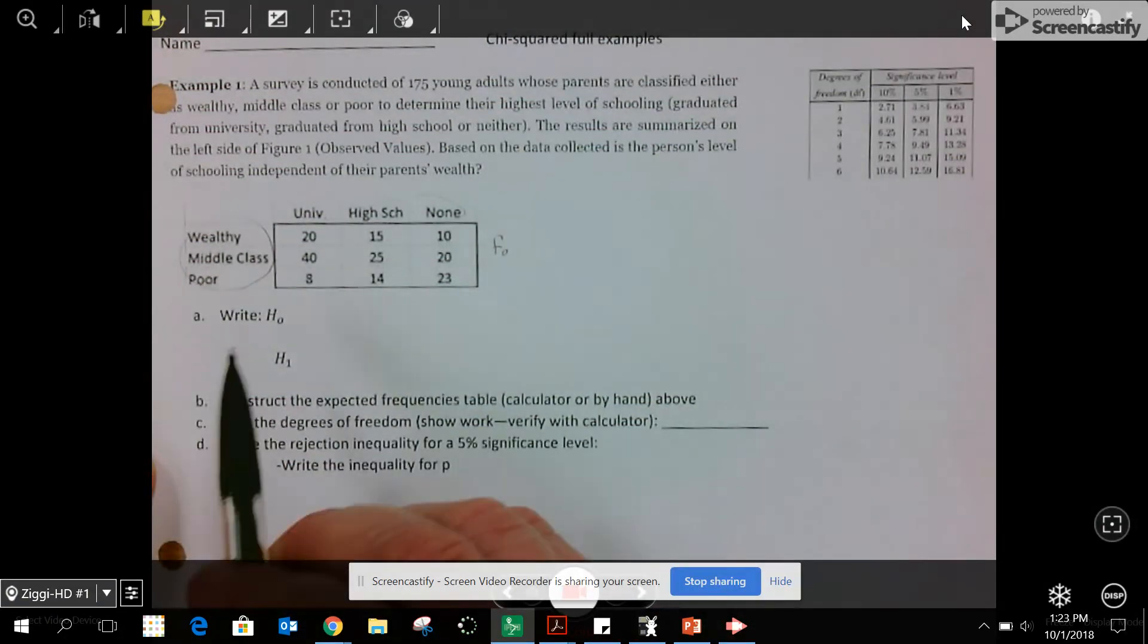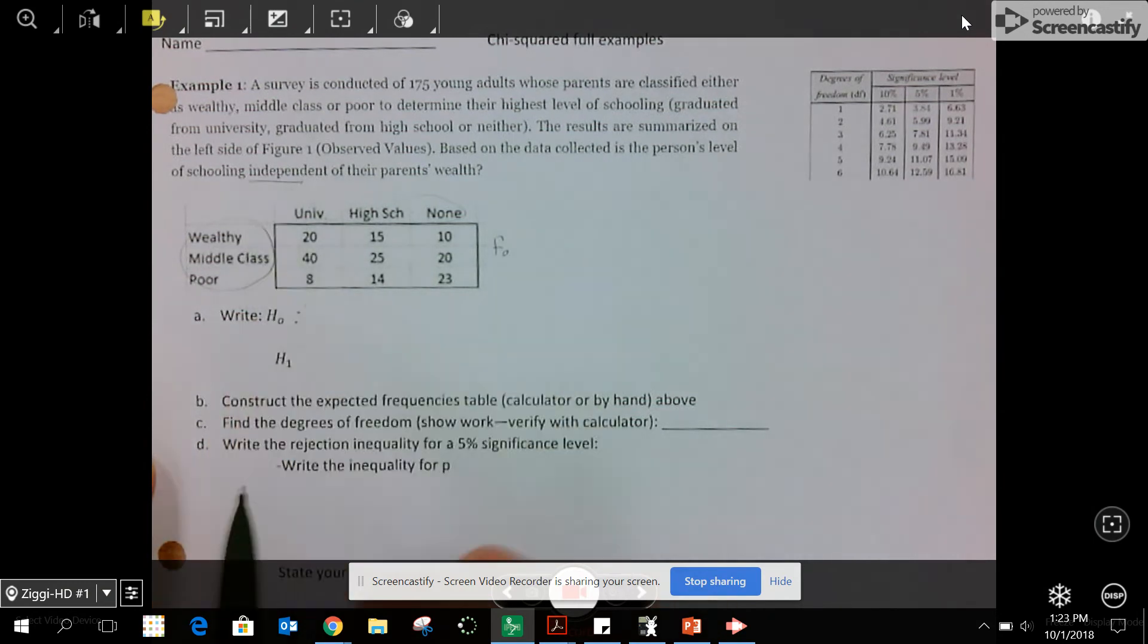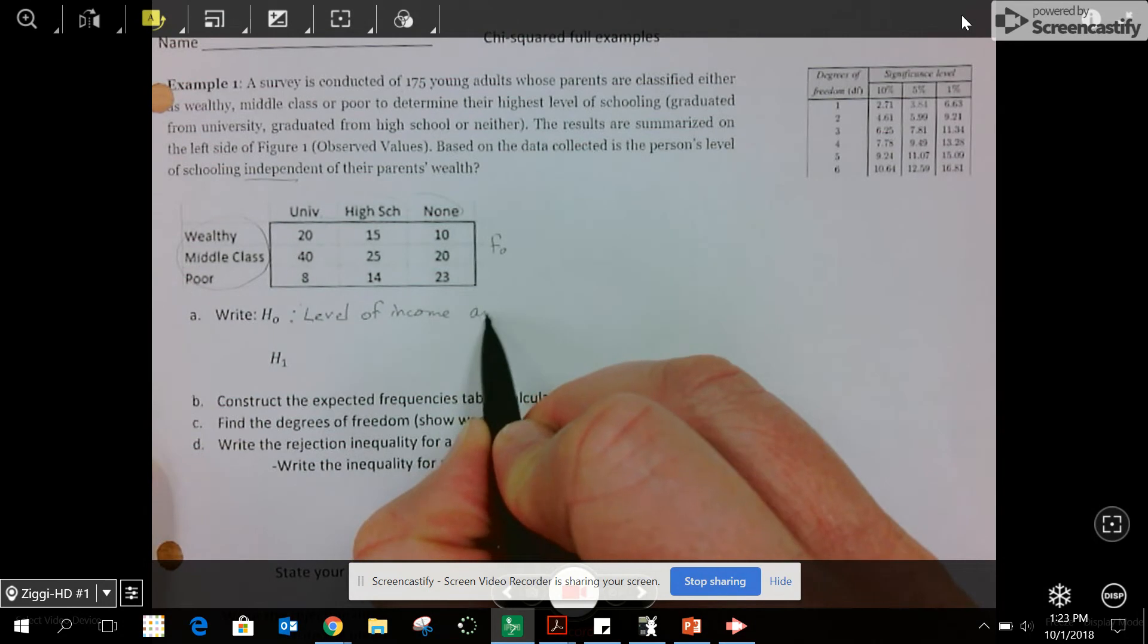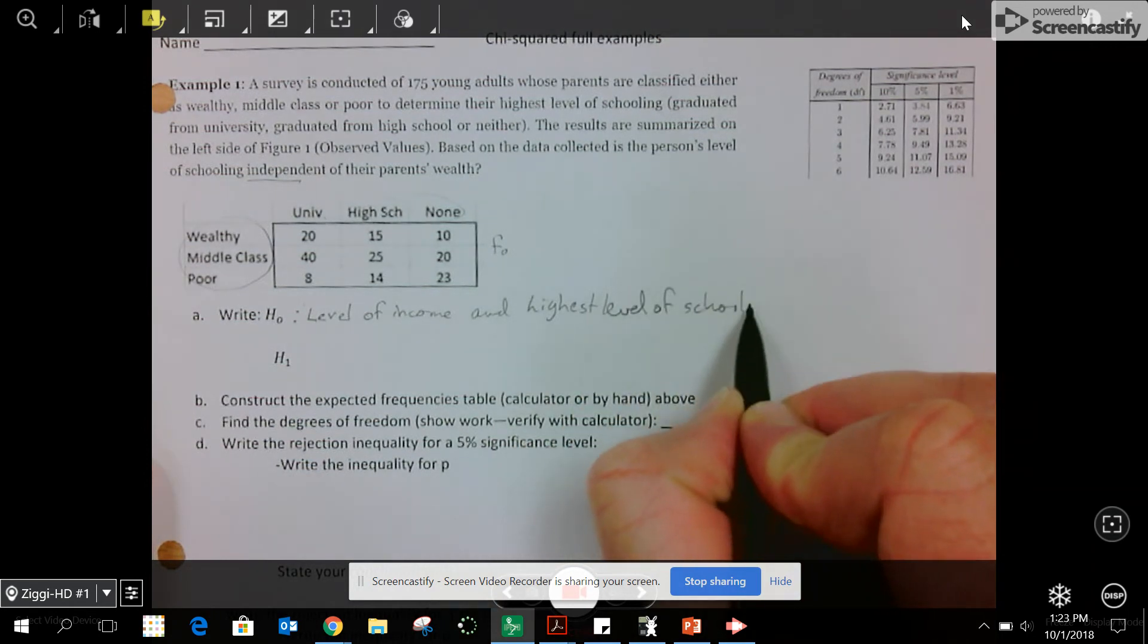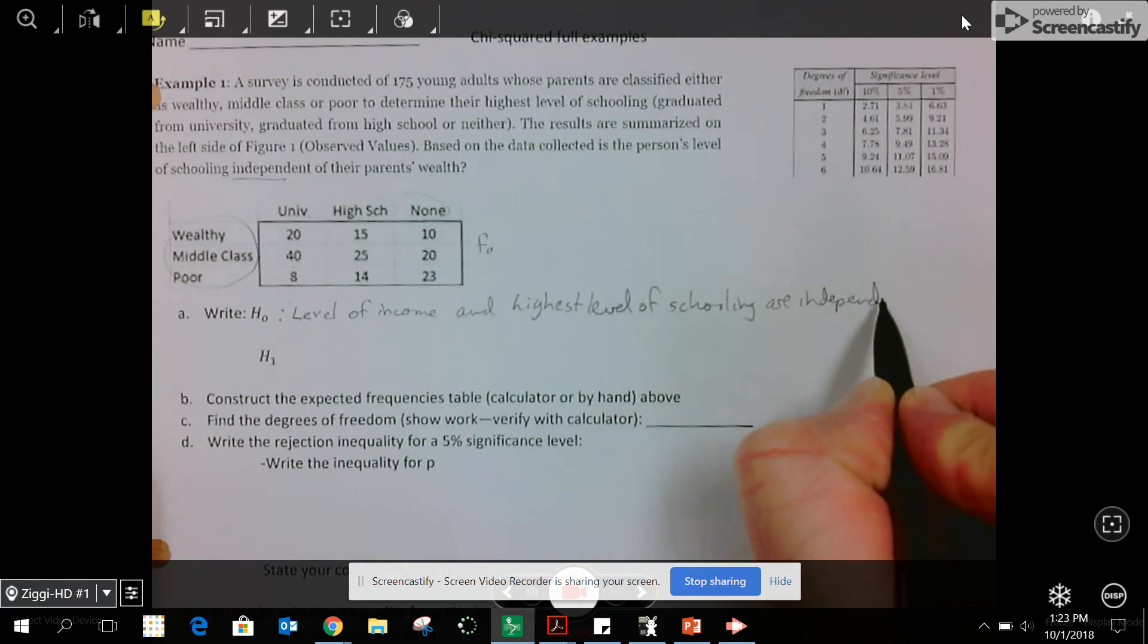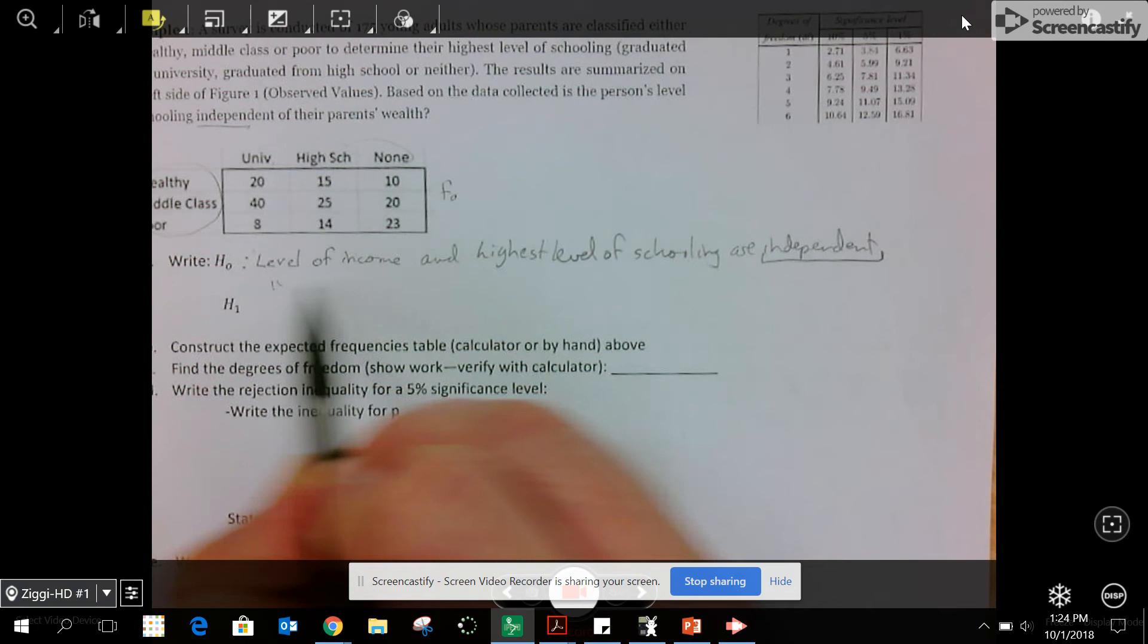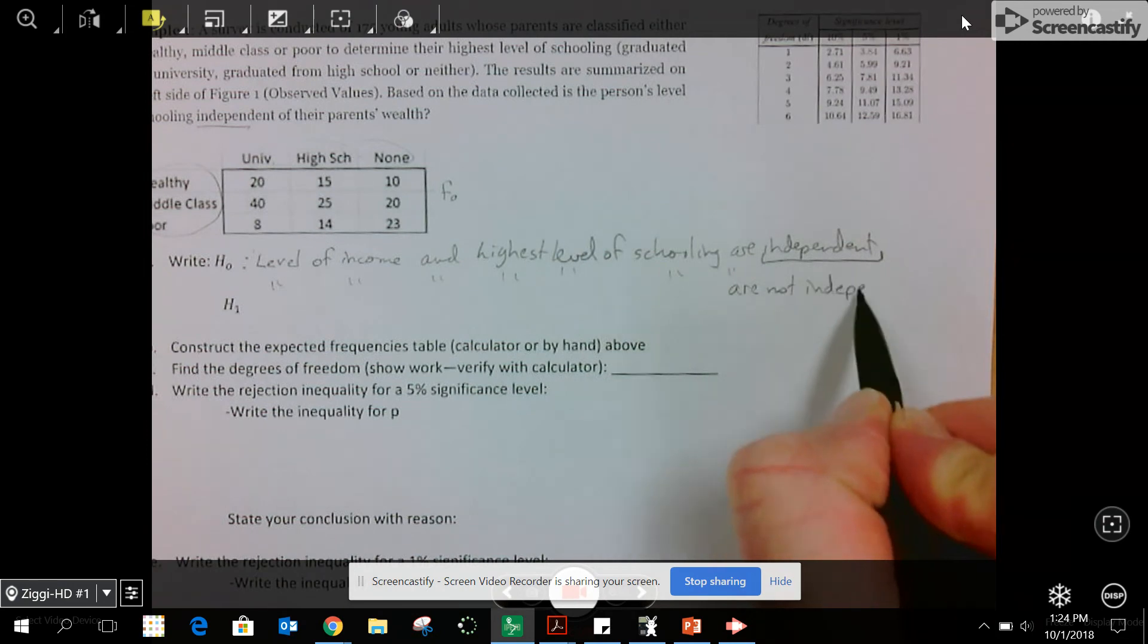The first thing you do is write a hypothesis saying that they are not related by saying independent. So it's a statement of independence: level of income and highest level of schooling are independent. The keyword is independent. Then the alternative hypothesis is the same thing but are not independent. Don't write dependent.